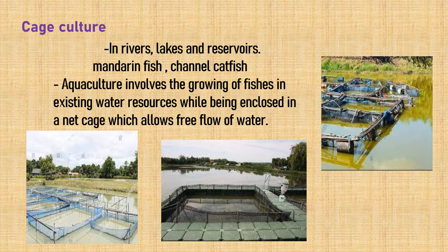The next practice is cage culture, conducted in rivers, lakes, and reservoirs. Mandarin fish and channel catfish are raised and bred here. Cage culture involves growing fishes in existing water resources while enclosed in a net cage, which allows free flow of water.